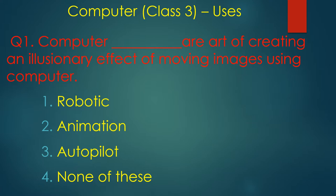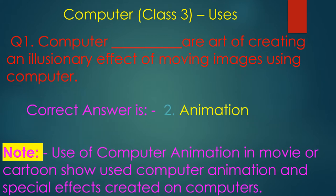Which type of computer is used to create the effect of a moving image? The answer is animation. Computer animation is the art of creating an illusionary effect of moving images using a computer. It is used in movies, cartoons, and for creating special effects on computers.